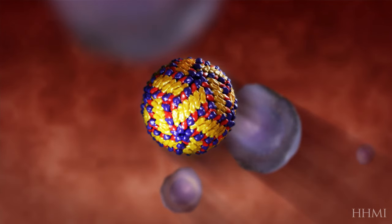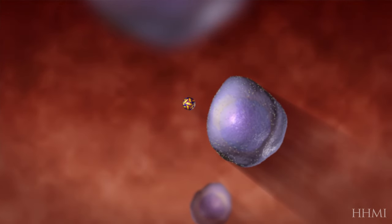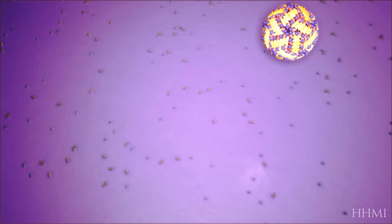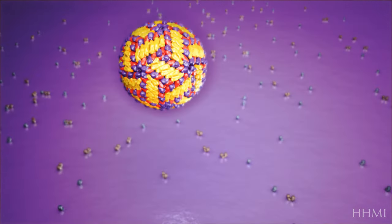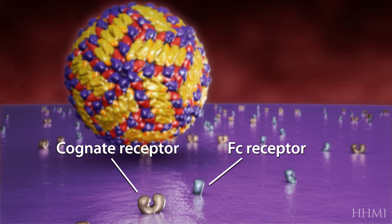Immune cells are targeted by the dengue virus. There are two cell surface receptor molecules important in dengue infection. The cognate receptor is involved in normal infection, and the FC receptor is involved in a phenomenon called antibody-dependent enhancement.